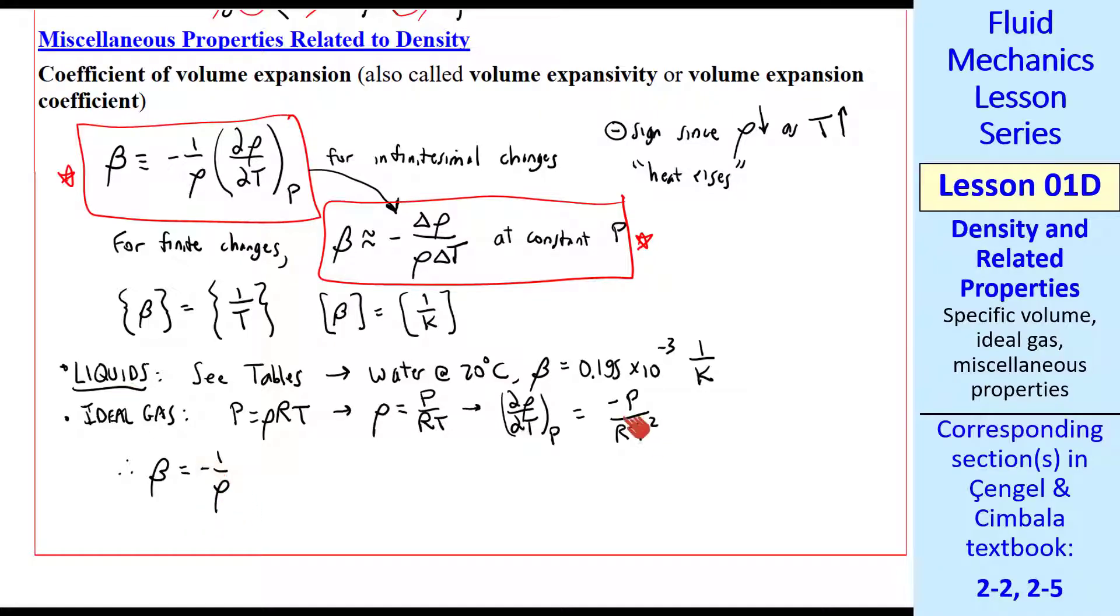And since p is rho RT, by our ideal gas law, this quantity is equal to 1. So beta is just 1 over T for an ideal gas.